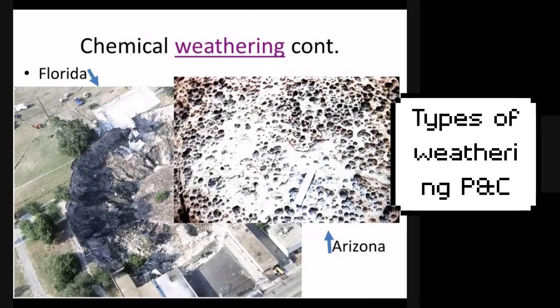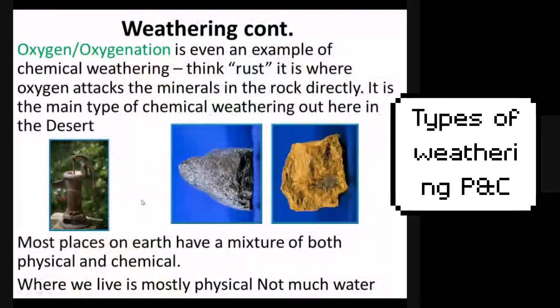A third type of chemical weathering is oxygenation. This does not require water — rust can still happen with water, but it can happen with just oxygen alone. It's where oxygen attacks the iron molecules or iron-bearing minerals inside a rock. It can turn magnetite into hematite or goethite, or turn bare iron that humans have made into rust. This often occurs where it's warm but doesn't have a lot of water.